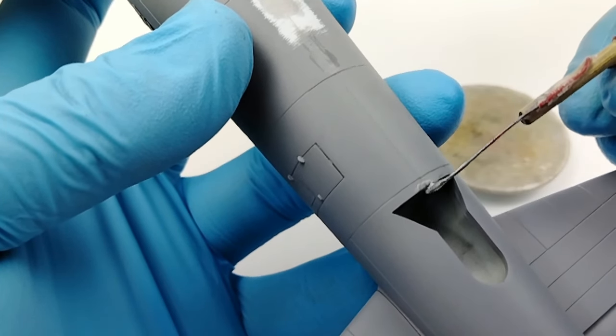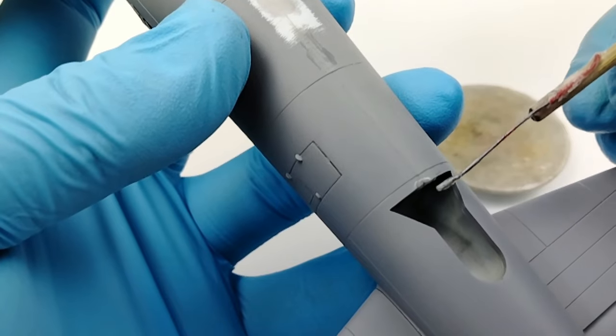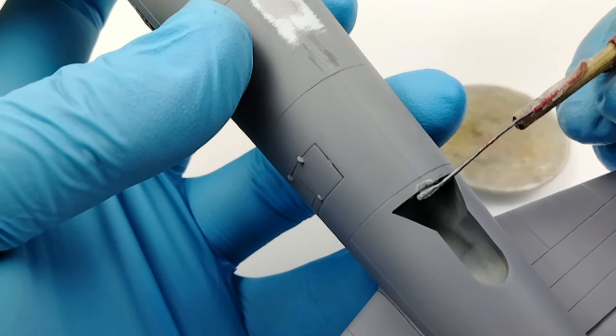As glue builds up on the wire and dries, you can take a simple pair of pliers to crush the glue and remove it, giving you a clean tool again.